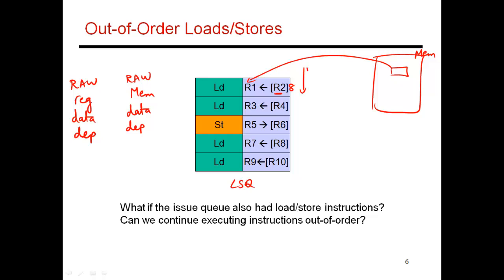Sometime later, you might get a broadcast saying register R2 is now available, so you set a bit saying R2 is available. Likewise, R6 might be available, R10 might be available, and so on. Every single cycle, the load-store queue is going to examine its contents. These loads and stores have two different stages: one stage that computes the effective address, and a second stage that accesses the data memory.